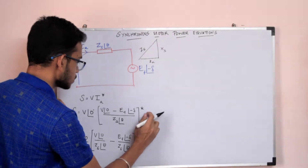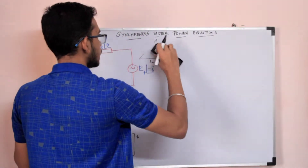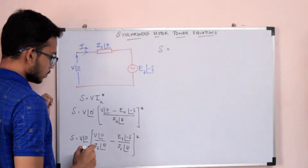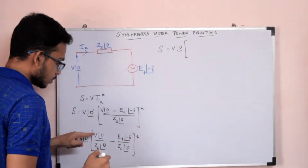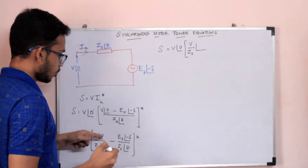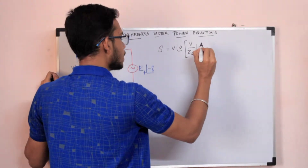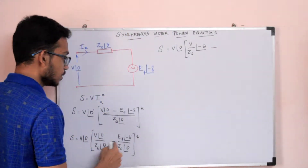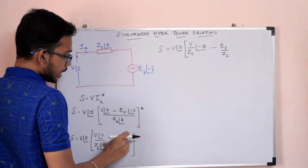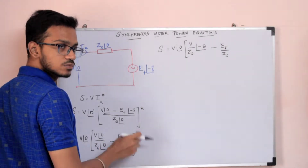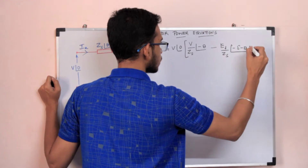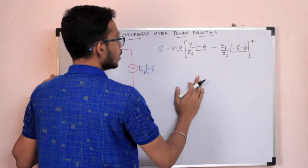We take the conjugate and split into two terms with a common denominator ZS angle theta: V angle zero divided by ZS angle theta, minus EF angle minus delta divided by ZS angle theta — the whole expression conjugated. In division, the arguments subtract, giving angle zero minus theta, which is minus theta for the first term, and minus delta minus theta becomes del plus theta for the second term.